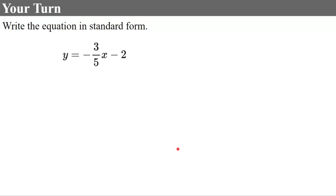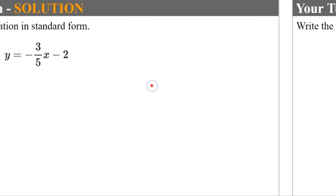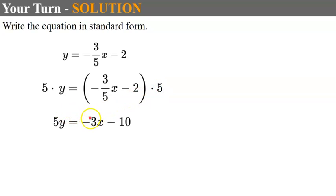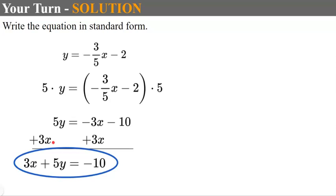Now it's your turn — pause and write the equation in standard form, then come back. Welcome back. First, clear the denominator by multiplying every term by 5, giving 5y equals negative 3x minus 10. Then add 3x to each side, giving 3x plus 5y equals negative 10. That is standard form.